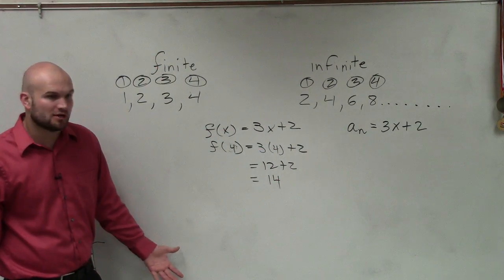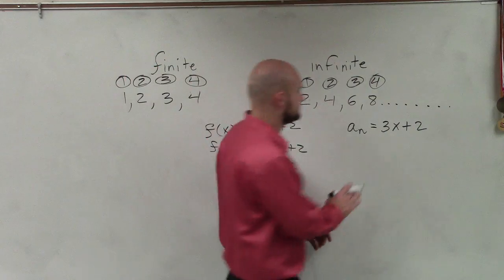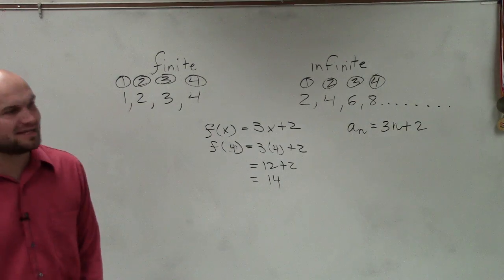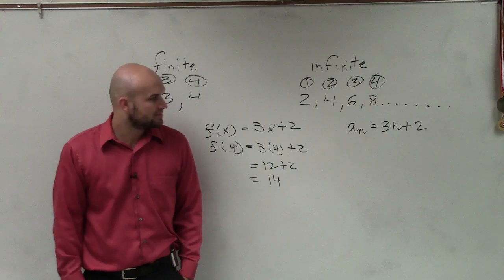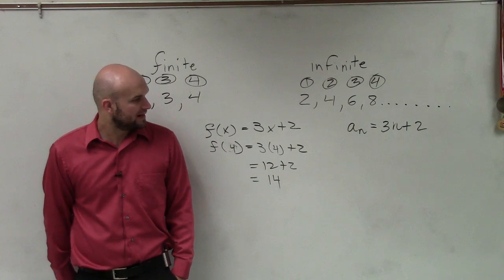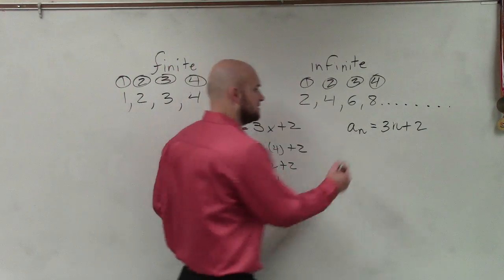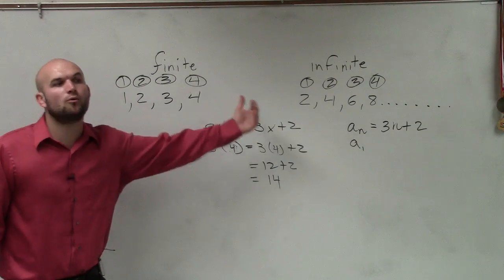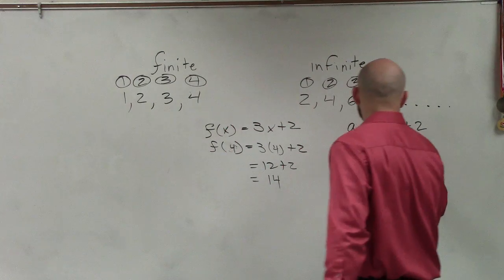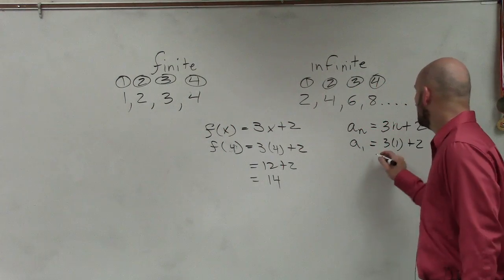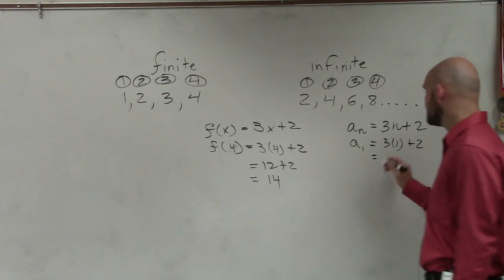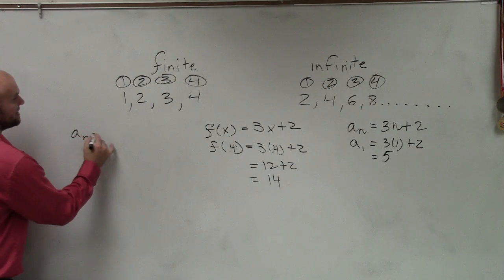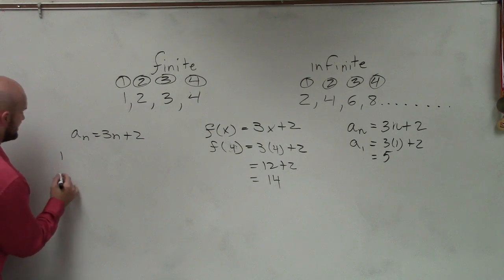The way we find these terms is we plug in. If I'm using a sub n, then n is my input variable — there's no x, it's just 3n plus 2. So if I want to find the first term, I would say a sub 1. Just like function notation, you plug a 1 into your value: 3 times 1 plus 2. A sub 1 equals 3 plus 2, which is 5. So our sequence starts with 5.